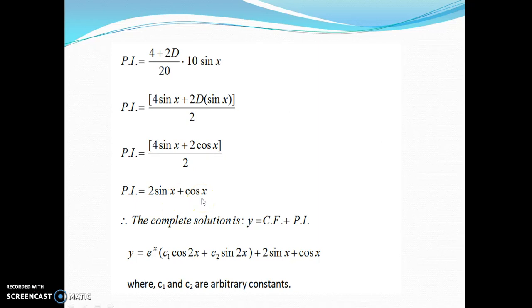We have CF and we have PI. So write down the complete solution: y = CF + PI, and don't forget to write where c₁ and c₂ are arbitrary constants.